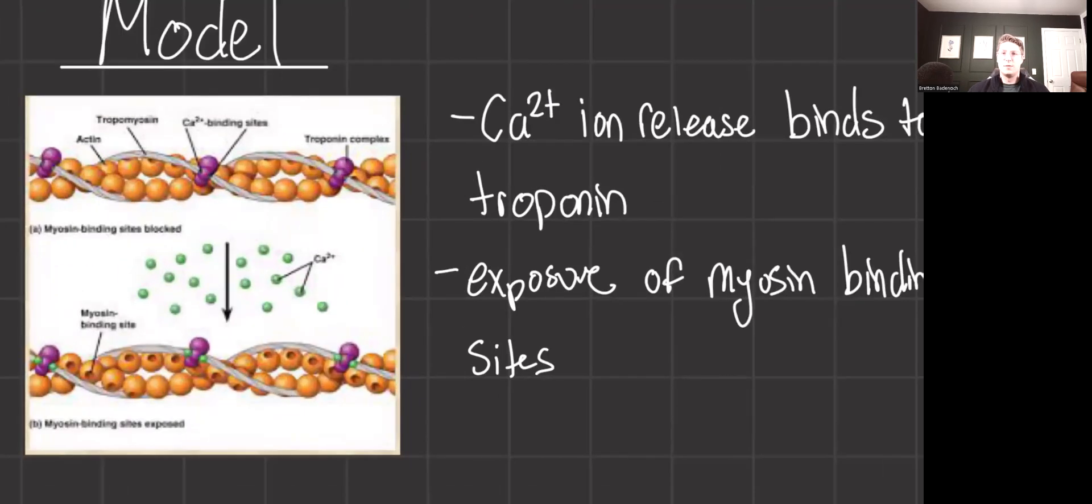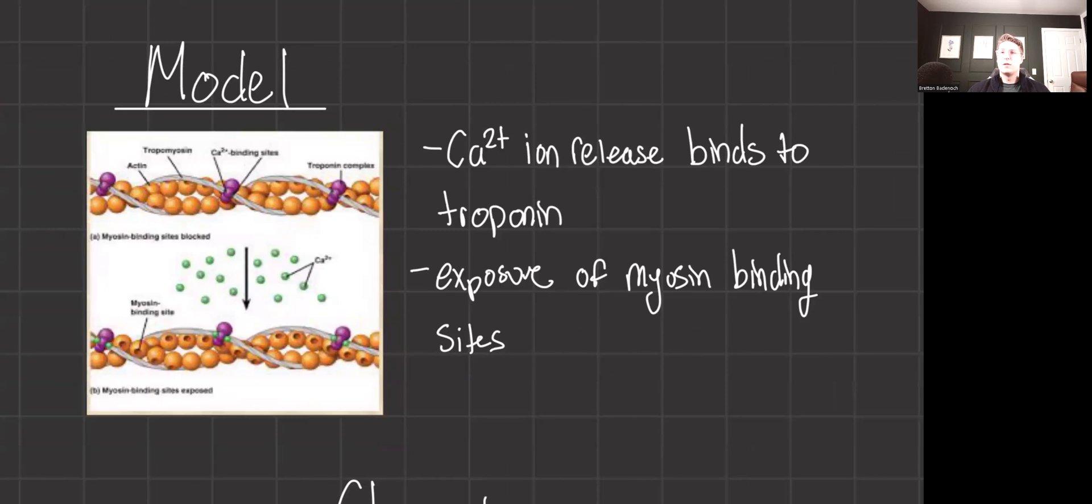The sliding filament model describes muscle contractions through the interaction between actin and myosin within muscle fibers. This process starts when an action potential triggers the sarcoplasmic reticulum to release calcium ions.